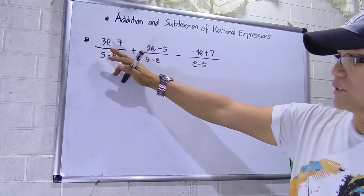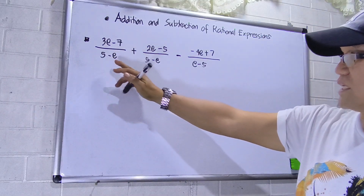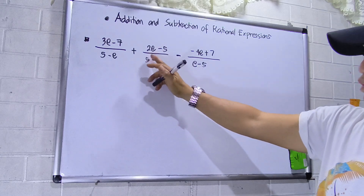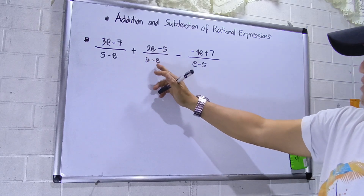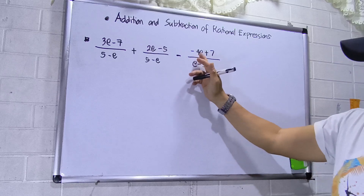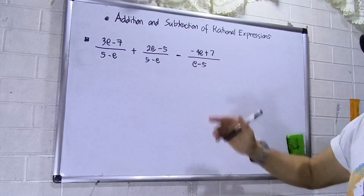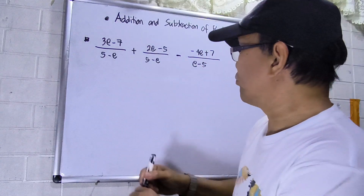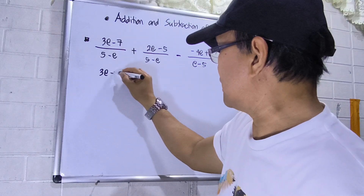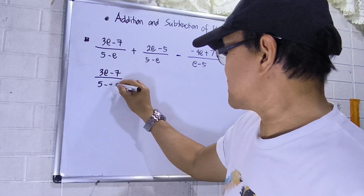So I have: (3e − 7) over (5 − e), plus (2e − 5) over (5 − e), then minus (−4e + 7) over (e − 5). I'll copy this one first: (3e − 7) over (5 − e).